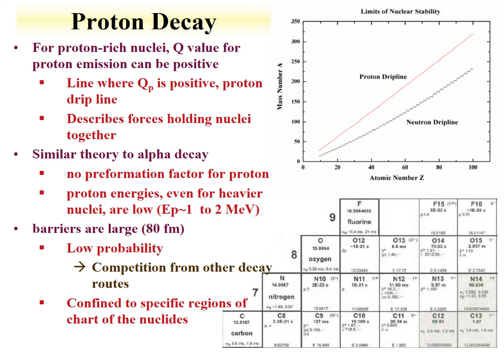The decay theory of proton decay can be similar to alpha decay. However, there's no preformation factor for a proton — for the alpha particle, we need two protons and two neutrons to get together, but the proton is just sitting there. Proton energies, even for heavy nuclei, are relatively low — 1 to 2 MeV — meaning the barriers are pretty large. The probability of penetrating those barriers is generally low. We need to go to some pretty exotic areas of the chart of the nuclides to explore these decays.